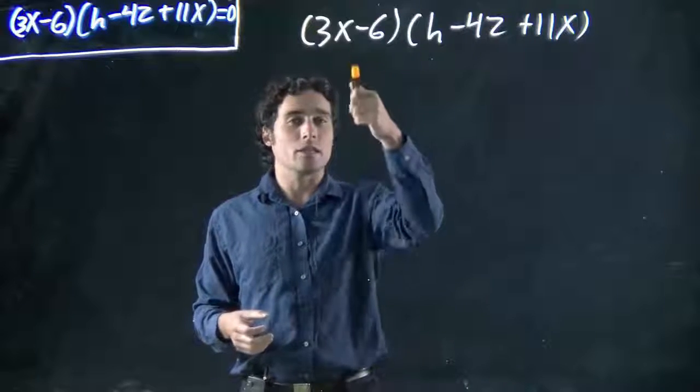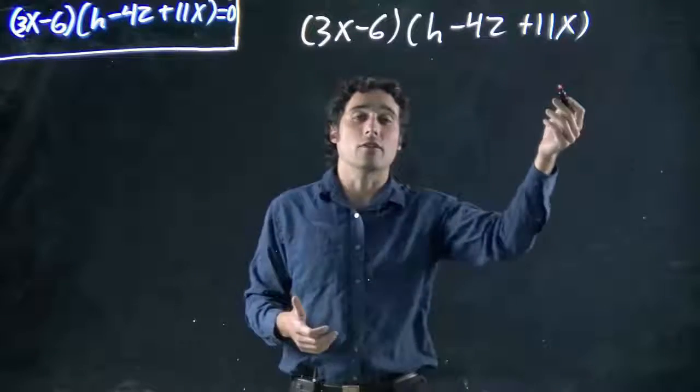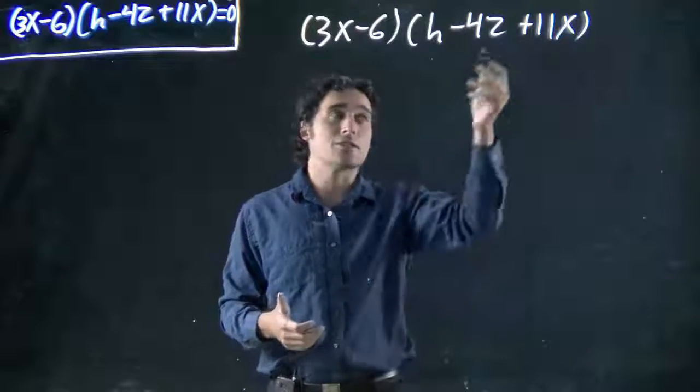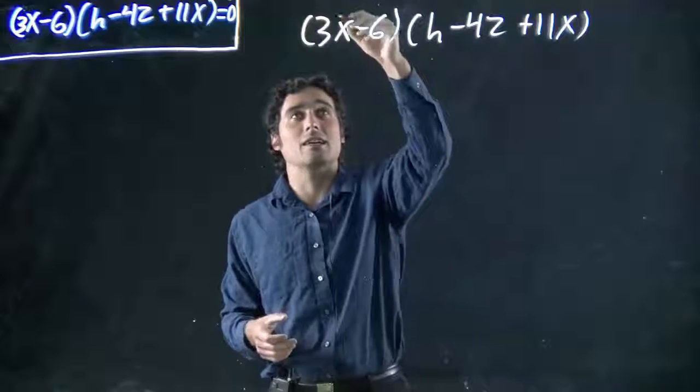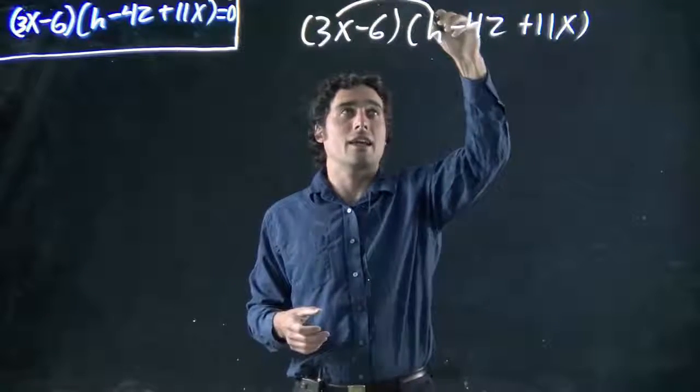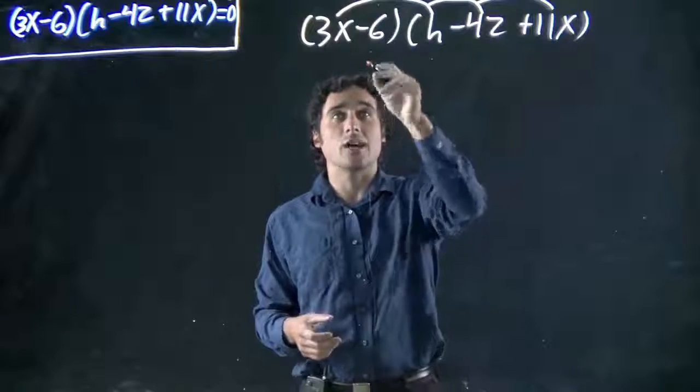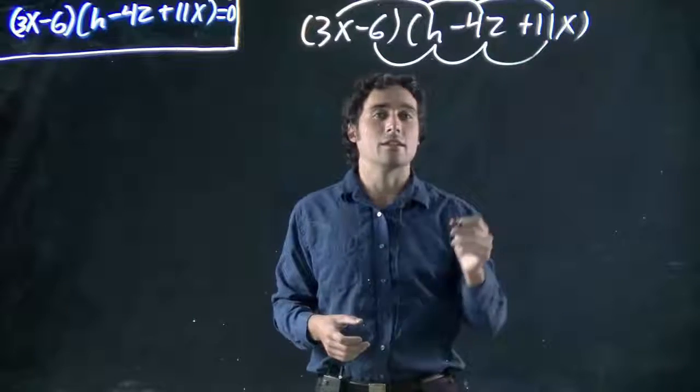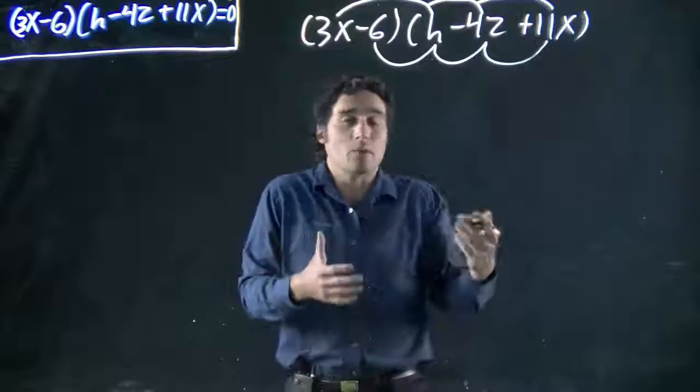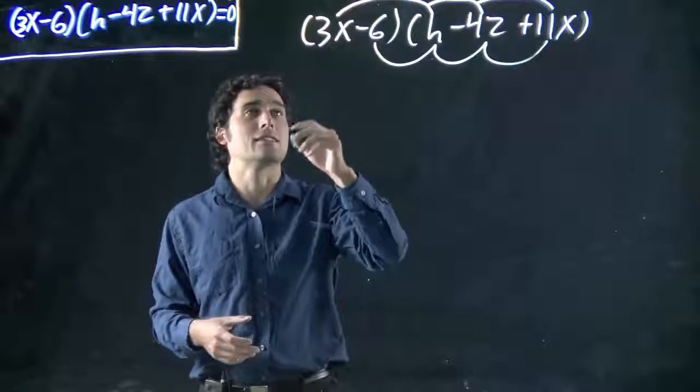So if I want to expand this out, I have to take all the terms in the first bracket and multiply it by all the terms in the second. Just because there's three terms, just because there are variables doesn't change anything. So 3x has to be multiplied by h, by 4z, and by 11x. And then minus 6 also multiplied by all three terms. Math's the same. There's a little bit more math because we're multiplying more terms, but so what? Math is the same.